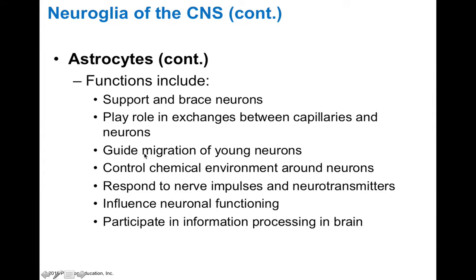Early in neural development, astrocytes help guide the migration of young neurons by sending out little scaffolding rods of protein that neurons can walk along. Astrocytes also control the chemical environment around neurons, ensuring that the proper conditions exist for neurons to transmit action potentials. They can respond to nerve impulses and neurotransmitters, influence neuronal functioning, and participate in information processing within the brain — functions that are relatively recent discoveries.